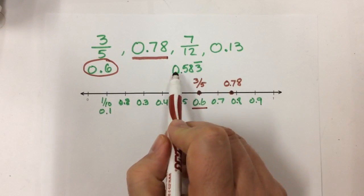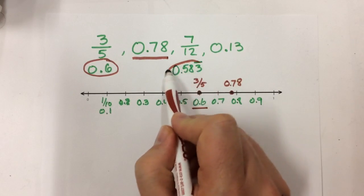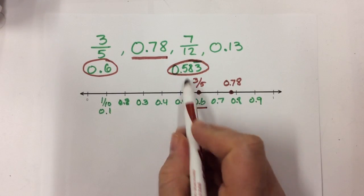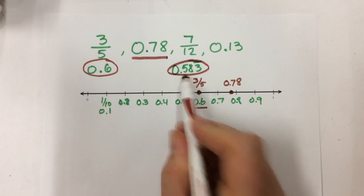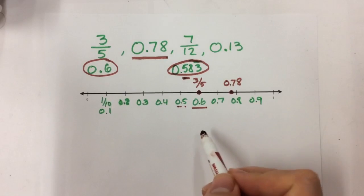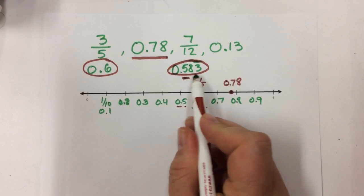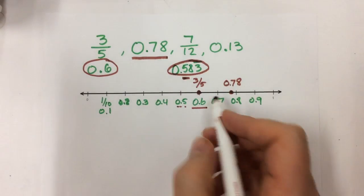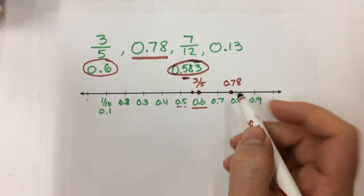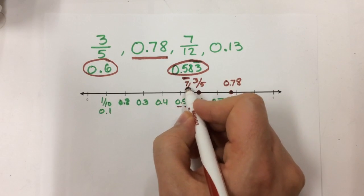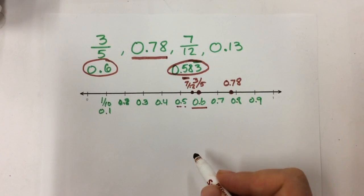The next one I have is 7 twelfths, and I remember that when I converted it, it came out to approximately 0.58. I'm going to look at my number line. There's 5 tenths right here. This is 58 hundredths, so it's closer to the 6 tenths — so it's right here. I'm running out of room but I'll squeeze it in right there.